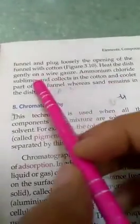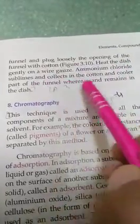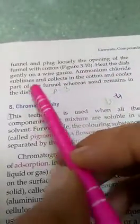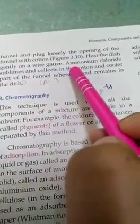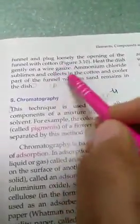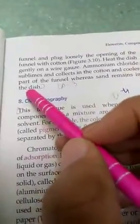Ammonium chloride sublimes and collects in the cotton and cooler part of the funnel, while sand remains in the dish. Ammonium chloride sublimes and goes up and collects in the cotton and the cool part of the funnel. The sand which is hot cannot go up, cannot sublime, so it settles down in the dish.